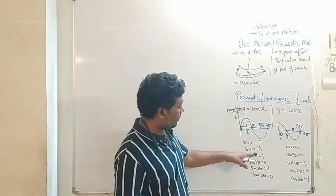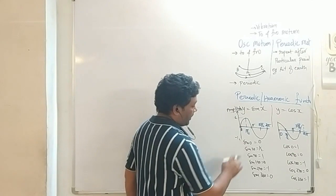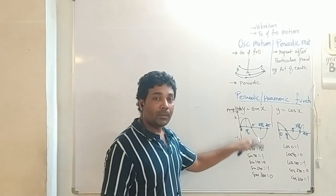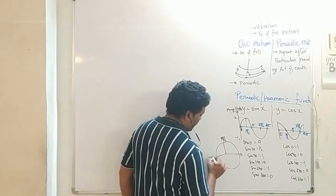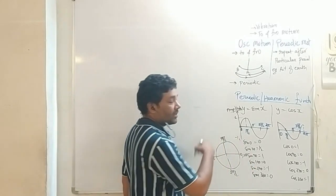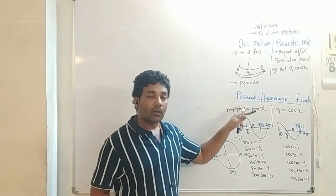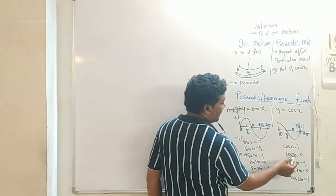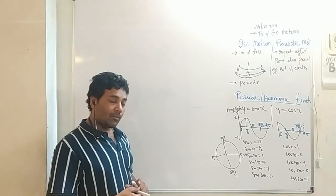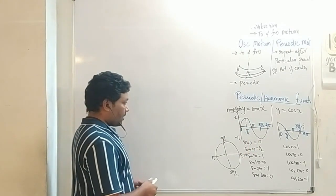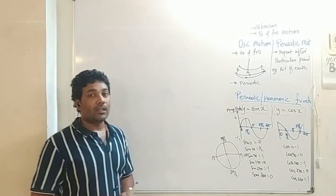So checking sin: at 0 the value is 0, at 90 it is 1, at 180 it is 0, at 270 it is -1, and at 360 it becomes 0 again — and then this keeps repeating. The same graph is repeated after every one rotation, and that is why we call it a periodic or harmonic function. So oscillations in simple form can be represented by y = sin x or y = cos x.